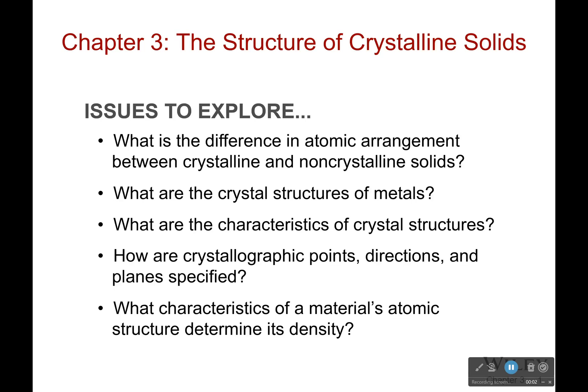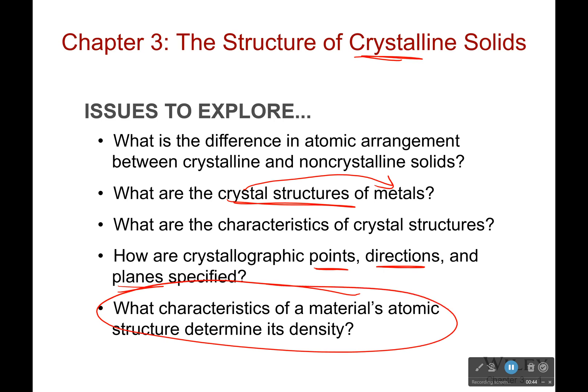Hello everyone, welcome back. In chapter 3 we're going through the structure of crystalline solids. First off, what is the difference in atomic arrangement between crystalline and non-crystalline solids? What are crystal structures, and what metals are crystals? What are the characteristics of crystal structures? What are the crystallographic points, directions, and planes? You're going to see a whole lot this semester, so make sure you master them. And finally, what characteristics of a material's atomic structure determine its density? Also important once we get to the mechanical properties.